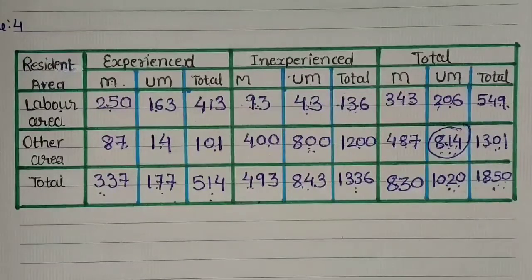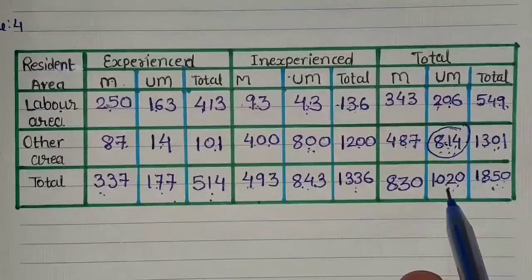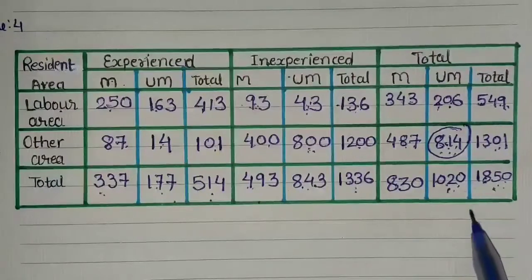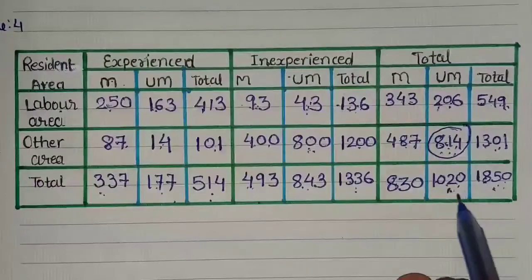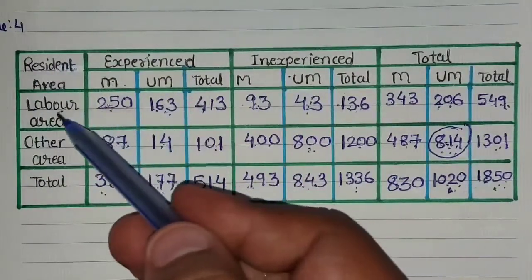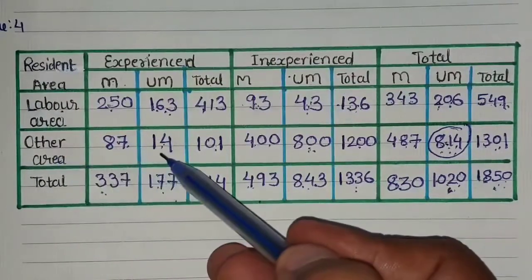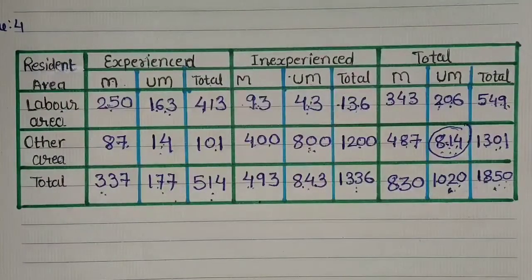अब अगर sum को आगे पढ़ा जाए तो देखते हैं: total women 1850 में से 1020 unmarried हैं — यह number हम पहले ही लिख चुके हैं। Among them, the number of experienced women from labour area and from other area were 163 and 14 — यह numbers भी हम पहले ही compute कर चुके हैं। तो book का पूरा sum खतम होने से पहले ही हमारी table ready हो चुकी थी।